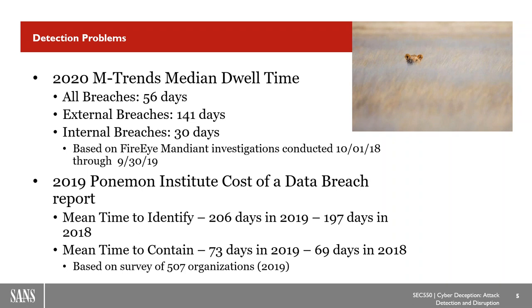Whether breaches are internally or externally discovered has a huge impact on detection time. Internally discovered breaches have a median dwell time of about 30 days, while externally discovered breaches jump up to 141 days. Those are some big numbers — 56 days is the better part of two months that bad guys are on our network before we know about them. The Ponemon Institute study talks about mean time to identify and mean time to contain.